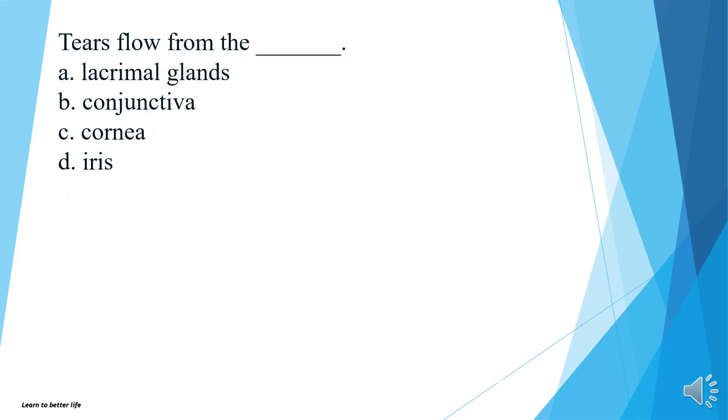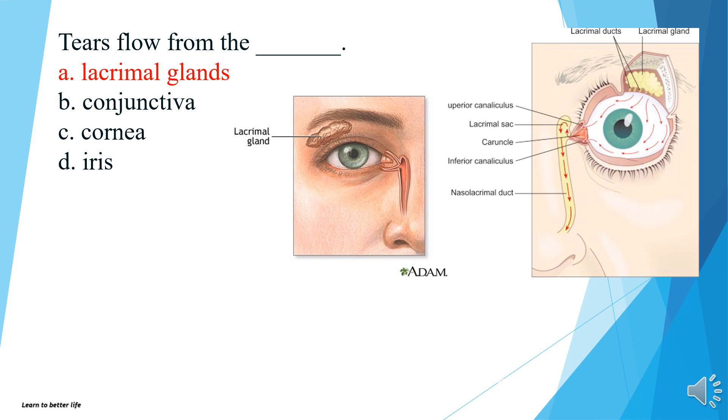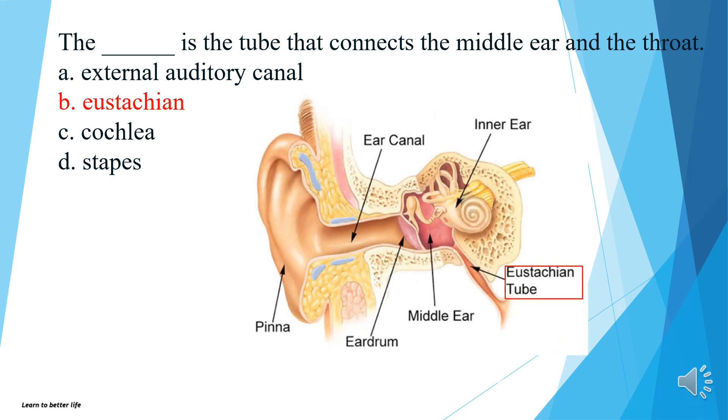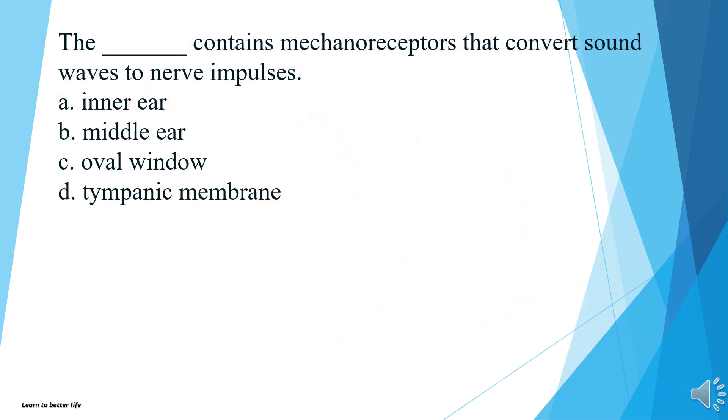Tears flow from the lacrimal glands, conjunctiva, cornea, or iris? The answer is A, from lacrimal glands. What is the tube that connects the middle ear and the throat? External auditory canal, eustachian, cochlea, or stapes? The answer is B, eustachian. What contains mechanoreceptors that convert sound waves to nerve impulses? Inner ear, middle ear, oval window, or tympanic membrane? The answer is A, inner ear.